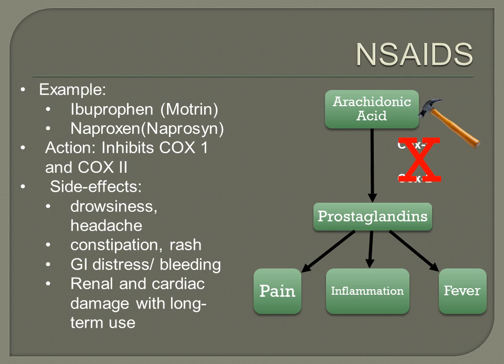NSAIDs are non-steroidal anti-inflammatory drugs. These medications decrease inflammation, pain, and fever by inhibiting COX-1 and COX-2, which inhibits prostaglandin synthesis. These medications can be helpful to patients with disorders we've been reviewing. NSAIDs include ibuprofen — brand names Motrin or Advil — or naproxen. Because COX-1 is inhibited, there are again concerns with these medications for gastrointestinal bleeding and GI distress.